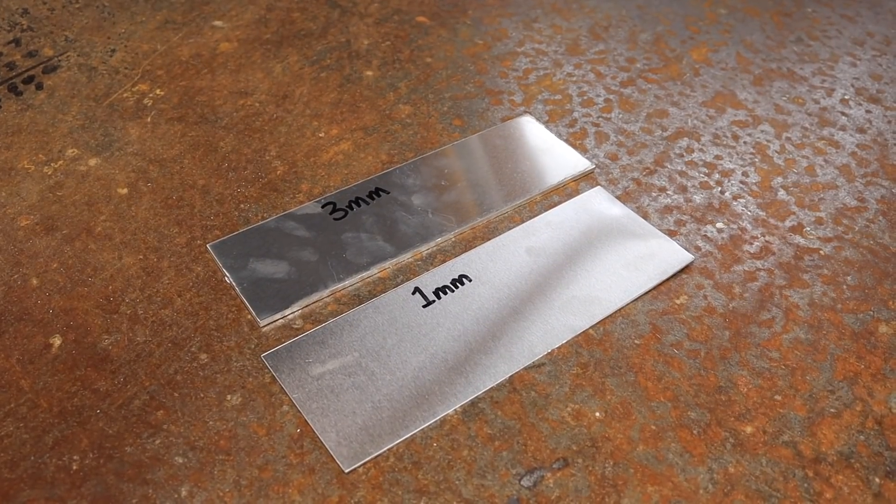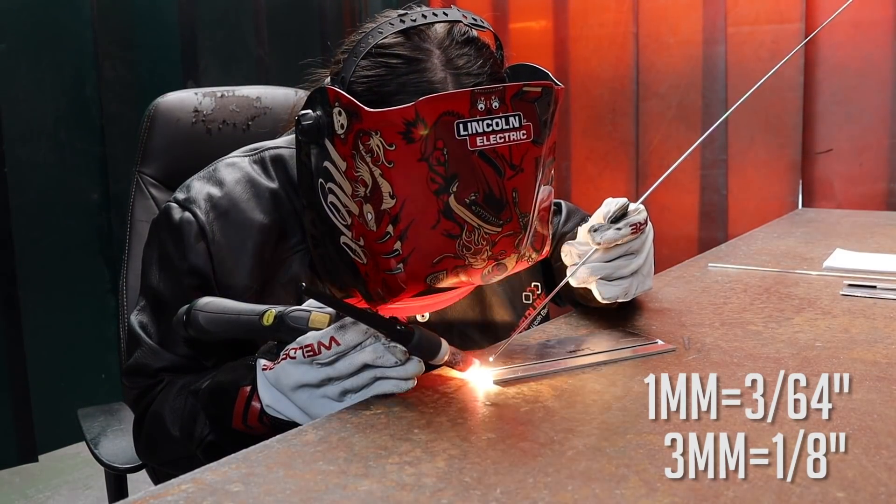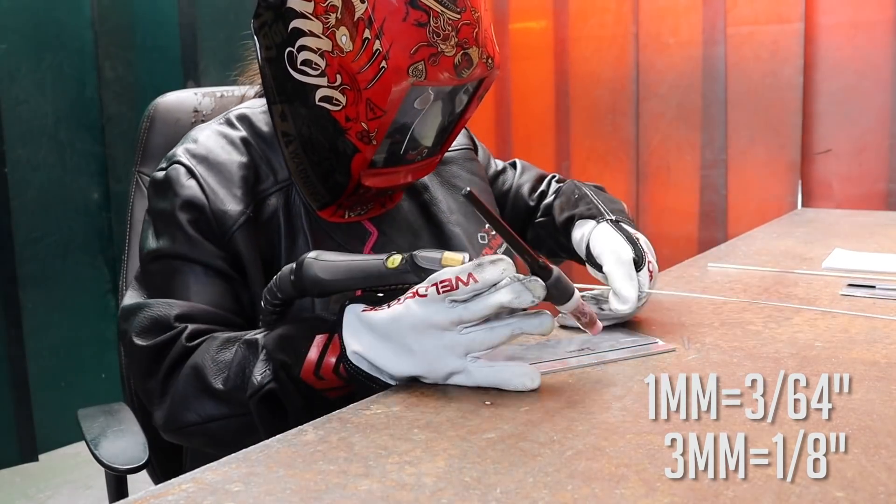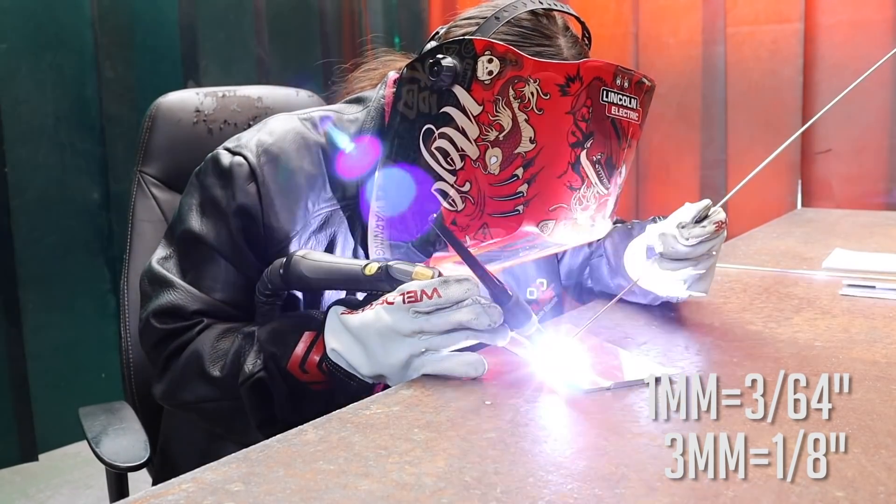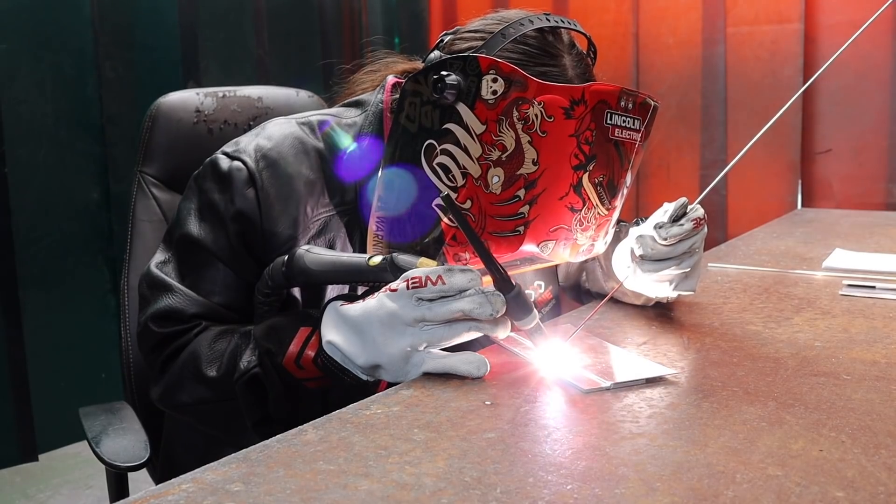I'm going to use the flick technique for this, a 3mm sheet to a 1mm sheet. The 3mm is going to go on the bottom of the lap weld and the 1mm is going to go on the top. I'm just going to tack it together so it stays firmly in place.